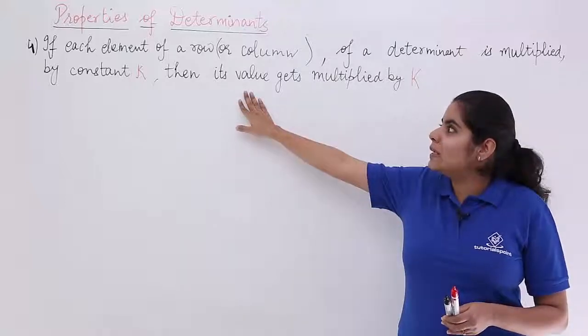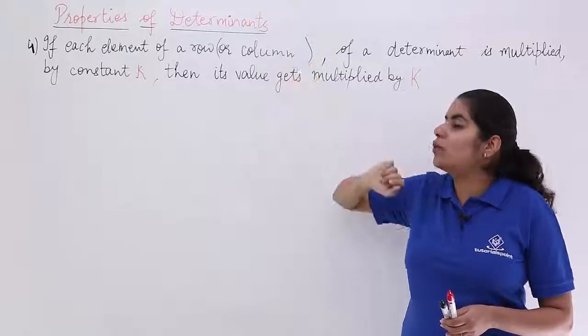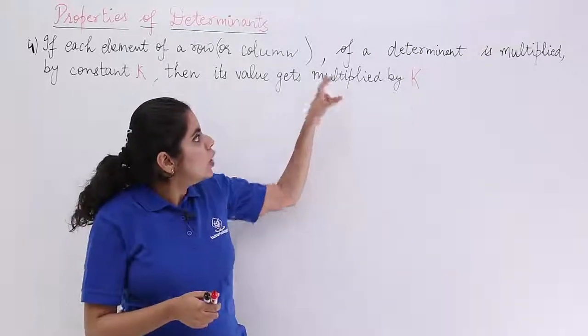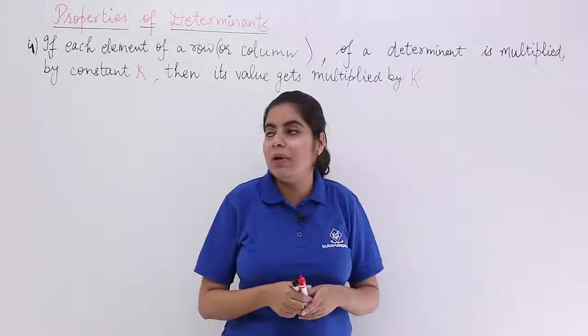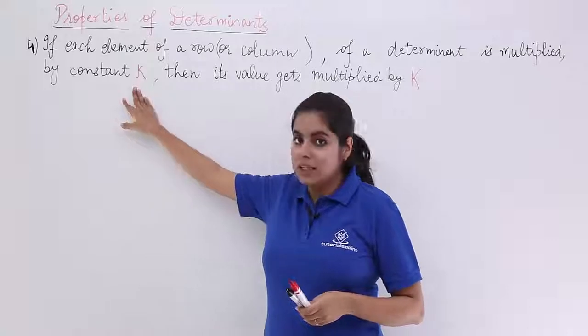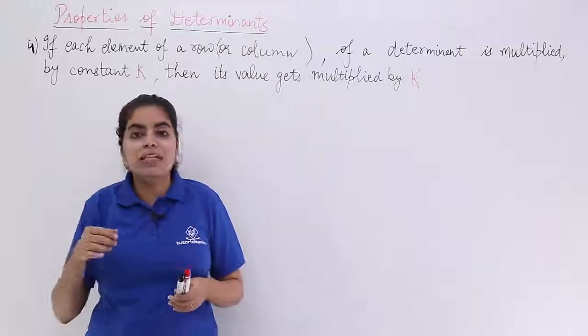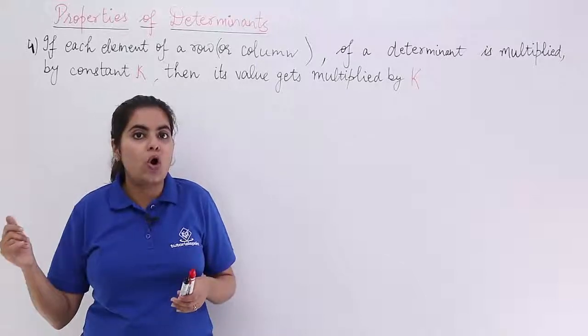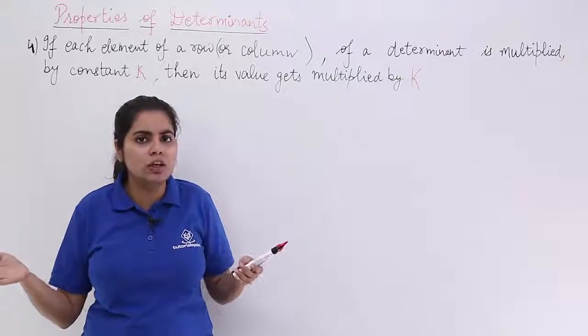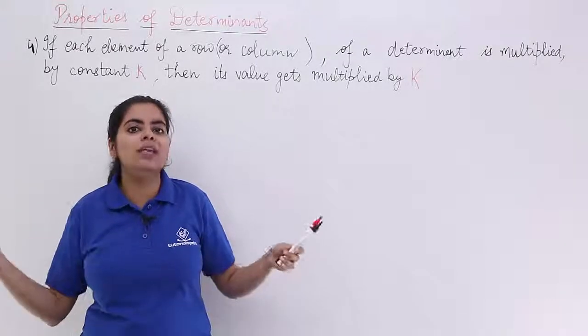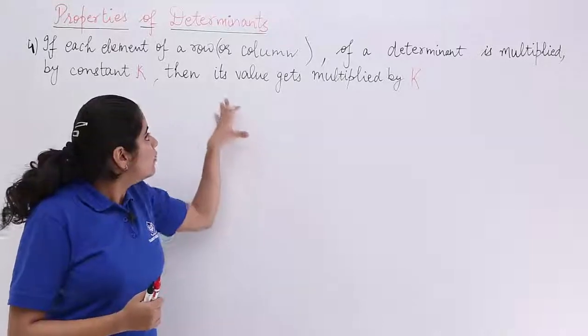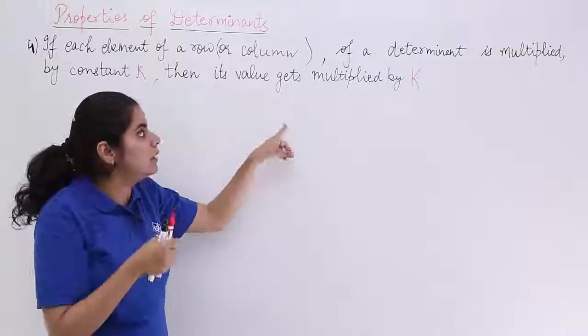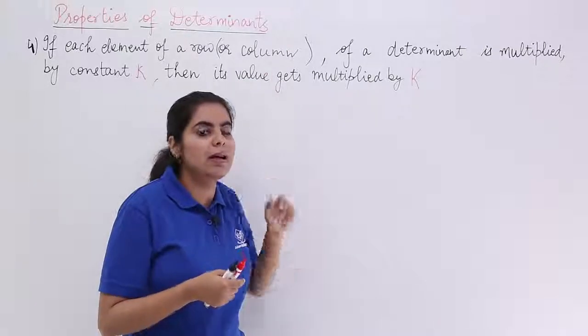Now, the property says if each element of a row or a column of a determinant is multiplied by a constant k, that means if you are taking one row and you are multiplying all the elements of that row or you are taking another column and you are multiplying all the elements of that column, what happens? That factor by which you multiply, the determinant value also gets multiplied by that factor.